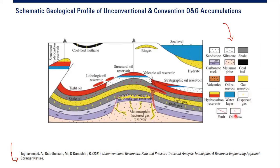Now looking at the left side — in coal bed methane we have gas in a dispersed distribution. Then biogas, which is continuous. Here we have conventional structural trapping: we have oil and then below we have water. And here is another structural trapping — a conventional anticlinal reservoir with gas on top, then oil, then water below. And then a lava fault.